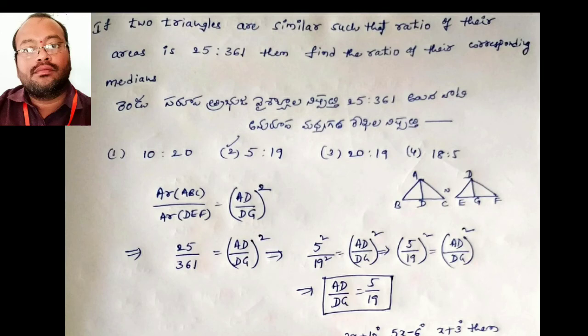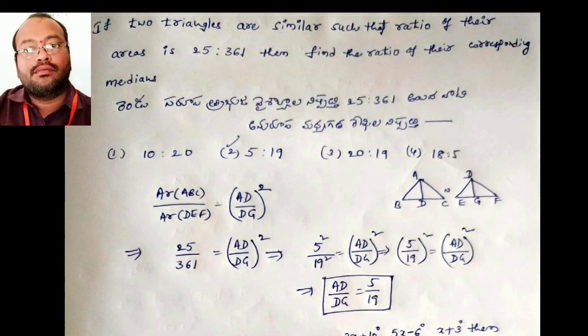The next question: if two triangles are similar and the ratio of their areas is 25 to 361, then find the ratio of their corresponding medians. For similar triangles, the ratio of areas equals the square of the ratio of medians. So the median ratio squared equals 25 by 361. Square root of 25 is 5, square root of 361 is 19. Therefore the ratio of corresponding medians is 5 to 19.